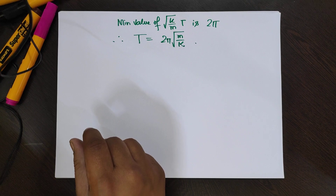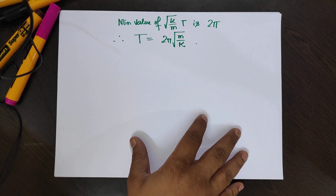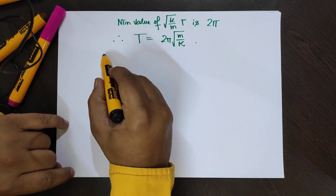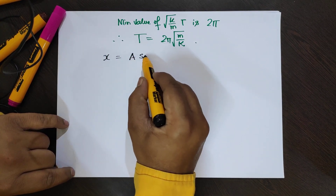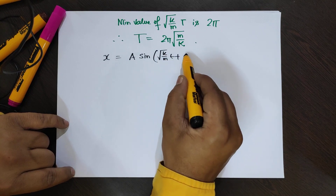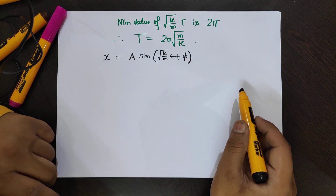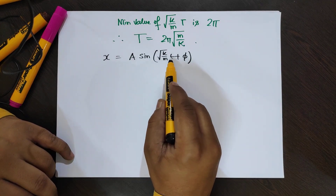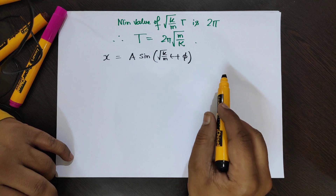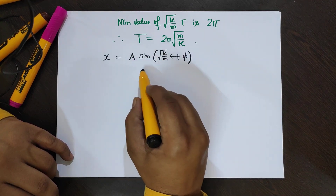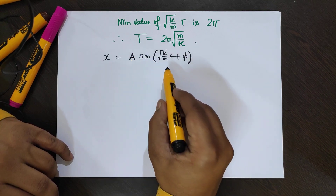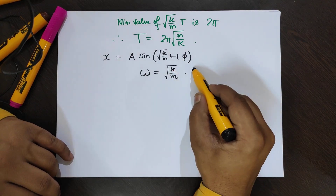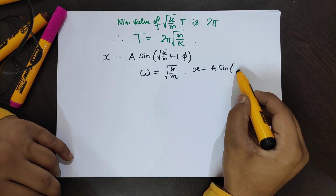We can compare SHM with uniform circular motion. The unit of √(k/m) is radians per second, so we give it the name omega equal to √(k/m). The equation of SHM becomes x equal to A·sin(ωt + φ), and the time period can be written as T equal to 2π/ω.